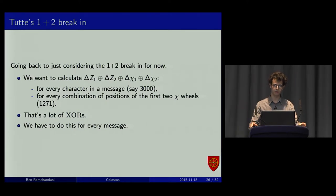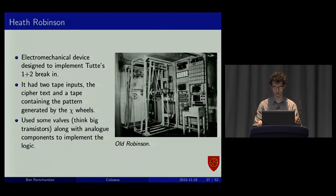They took inspiration from the bomb machine. Made an electromechanical device with some analog circuits that implemented Tuts 1, 2 break-in. It took two tapes, the ciphertext, punch tape, and chi pattern. If you already knew the cams, you'd put them into a punch tape, you'd feed this into the machine. And this sped things up pretty dramatically. It could have been better, but it did give a big speed up.